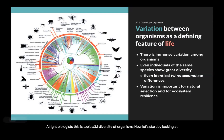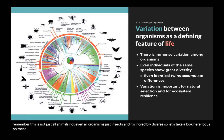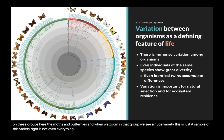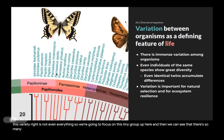Let's start by looking at this diagram of the diversity of insects. Remember, this is not just all animals, not even all organisms — just insects. And it's incredibly diverse. Let's focus on these groups here, the moths and butterflies. When we zoom in on that group, we see a huge variety. This is just a sample of this variety — it's not even everything. And we can see that there are so many genera and so many species.